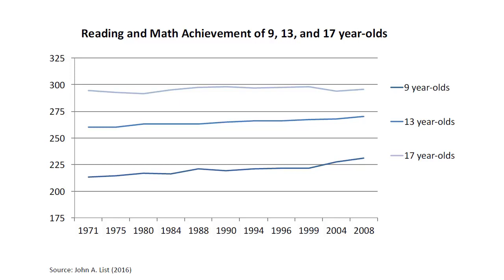Test scores are another outcome used to measure education quality. Here too, the trends seem quite flat. Standardized test scores in reading and math did not improve much between 1971 and 2008. This is true for students of different ages: nine-year-olds, thirteen-year-olds, and seventeen-year-olds. It seems to be a general trend.